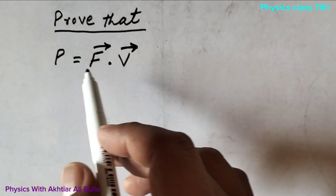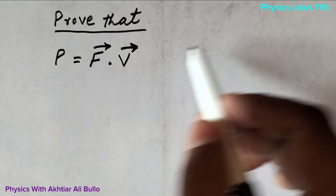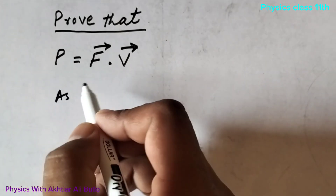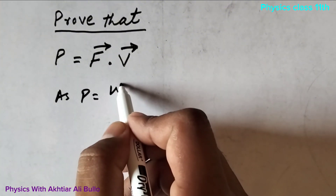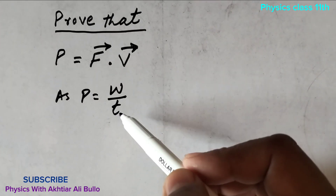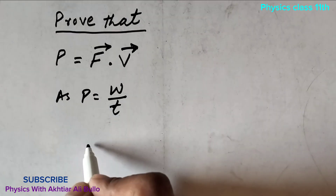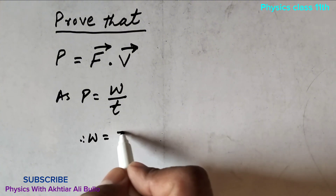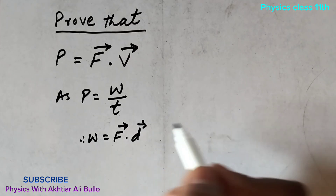Prove that P is equal to F dot V. Power is equal to work done per unit time, meaning the rate of doing work is known as power. As we know, work is the dot product of force and displacement.